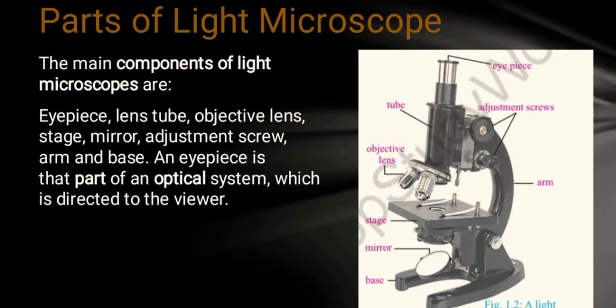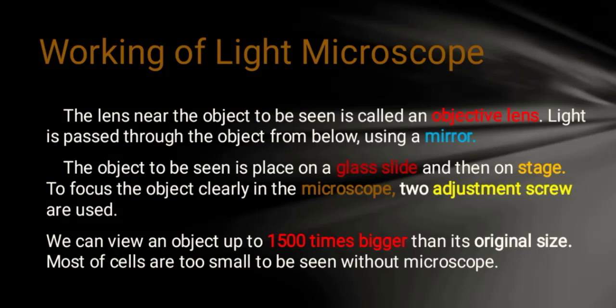An eyepiece is that part of an optical system which is directed to the viewer. The lens near the object which is seen is called the objective lens.